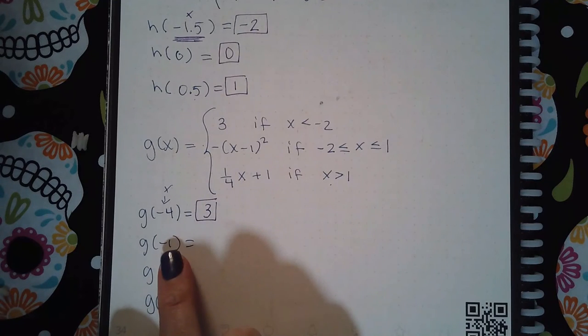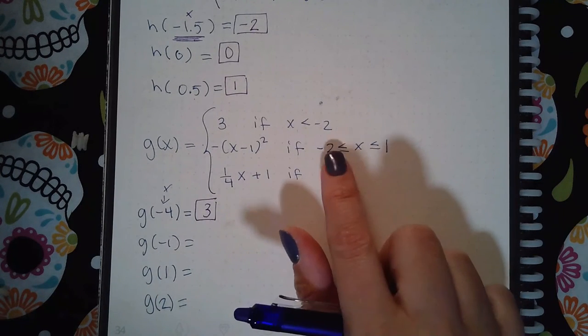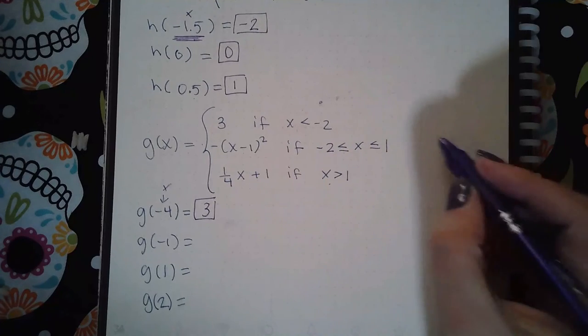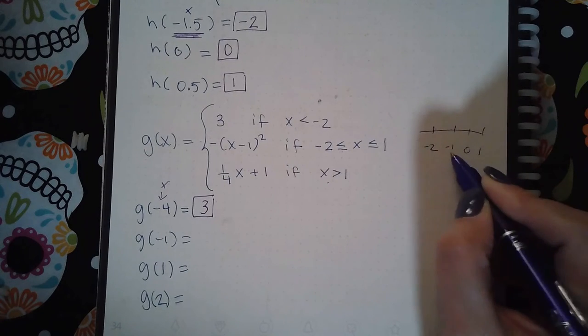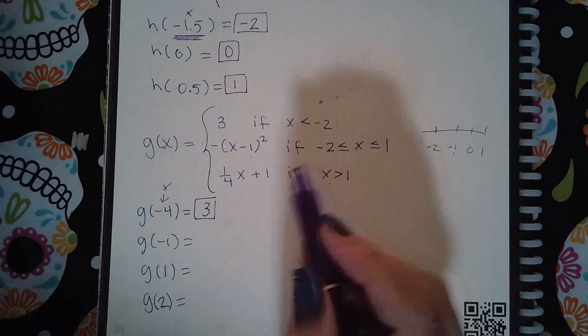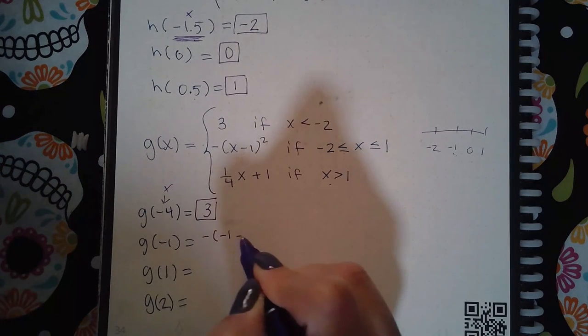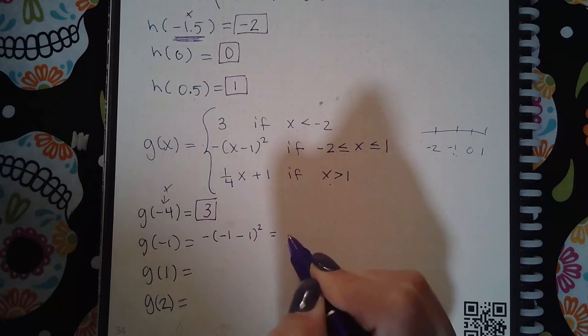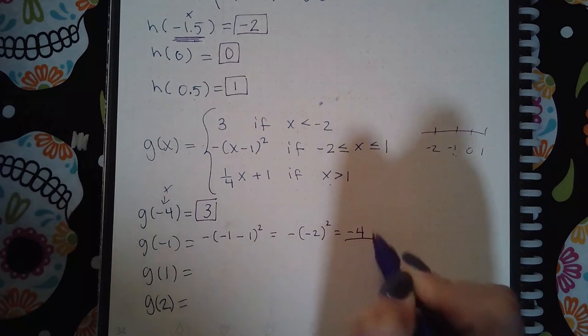Here we have negative 1, and negative 1 would be between negative 2 and 1, right? If you have a number line, here's negative 2, here's 1, there's negative 1, there's 0. Negative 1 is between negative 2 and 1, so then this is the expression I would plug in that x value of negative 1, and then if I calculate this I get negative 4 as my y value.